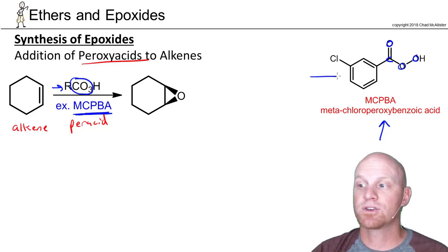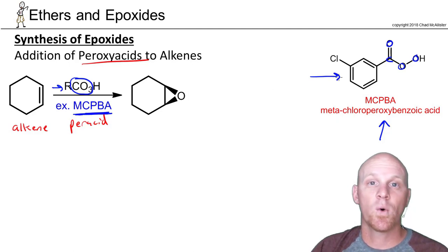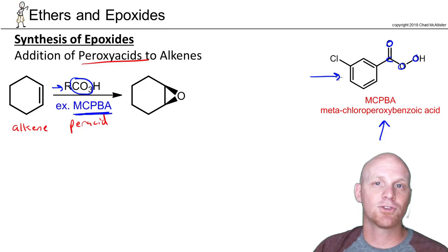Probably the most common. I could even show the structure of either MCPBA or any peroxy acid and you're supposed to realize that's a peroxy acid. That'll turn the alkene into an epoxide.